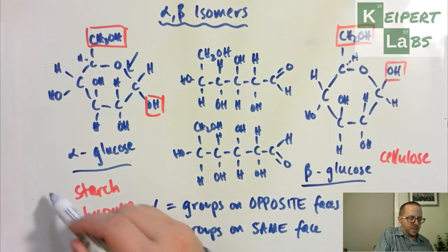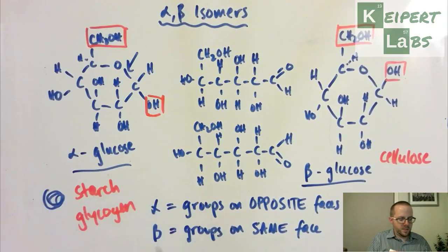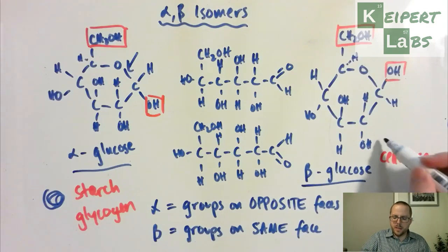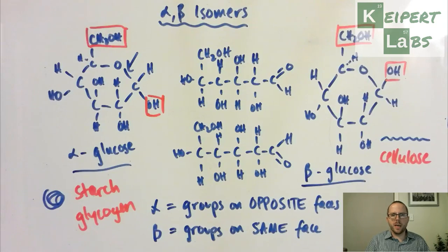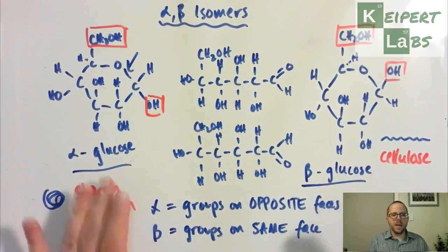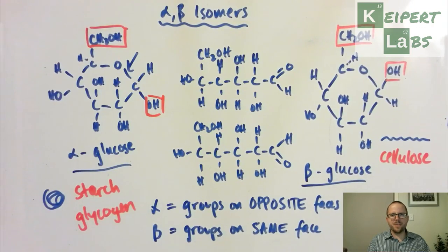Starch ends up producing these spirals. That's a terrible looking spiral, but yeah. And then whereas cellulose makes these kind of relatively linear zigzag sort of patterns. So all down to the difference between alpha and beta. All right, that finishes things up. Thanks very much for watching. Bye for now.